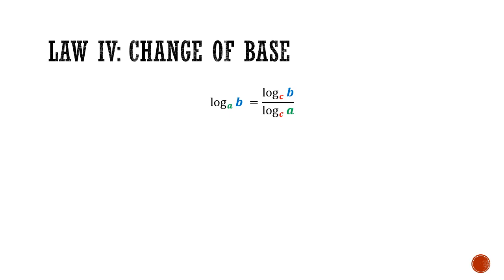Law number 4, the change of base law. This states that if I have log base a of b, I can change it to log base c of b over log base c of a. The proof goes as follows. I will let log base a of b be k. Next, I will convert this to index form. This will give me a to the power of k equals to b. And I can take log of both sides for any base I like. And I'm going to just introduce a new base, base c. So I take log base c of both sides.